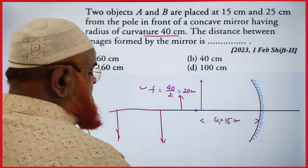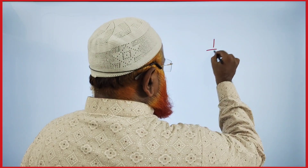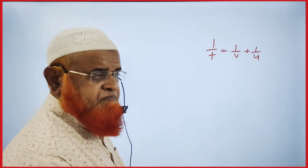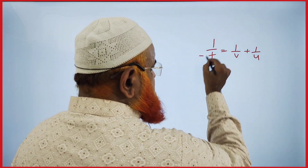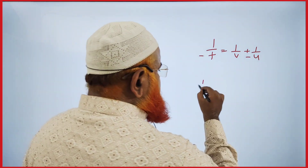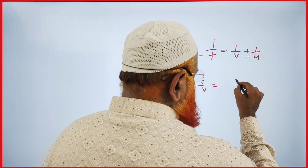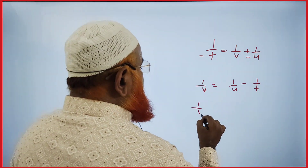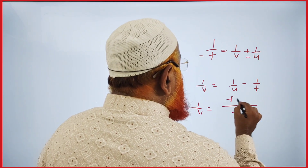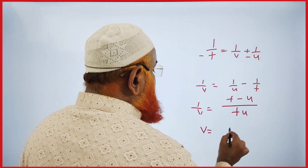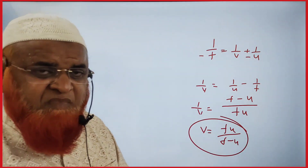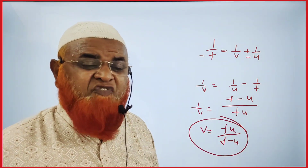For this, I'll tell you a simple concept. You know: 1/f = 1/v + 1/u. This is the mirror formula. For a concave mirror, this gives us 1/v = 1/u − 1/f. Simplifying, v = f·u / (f − u). You can use this shortcut formula to find the solution.